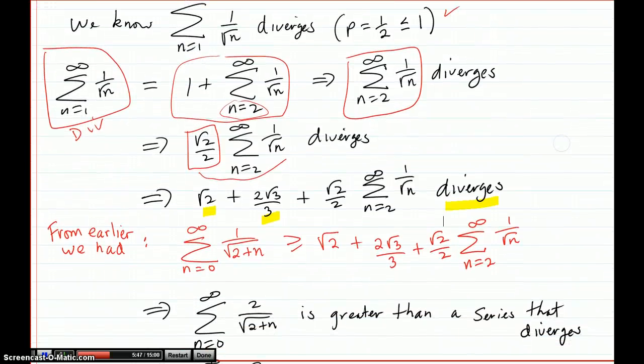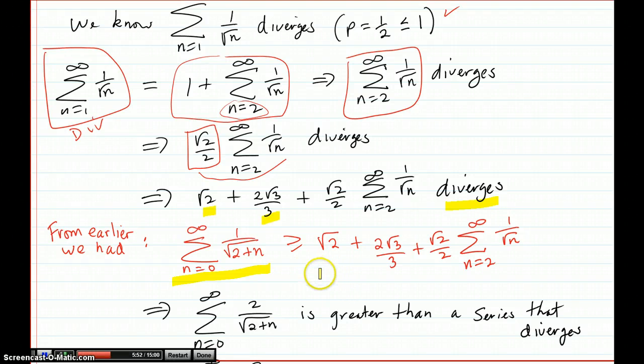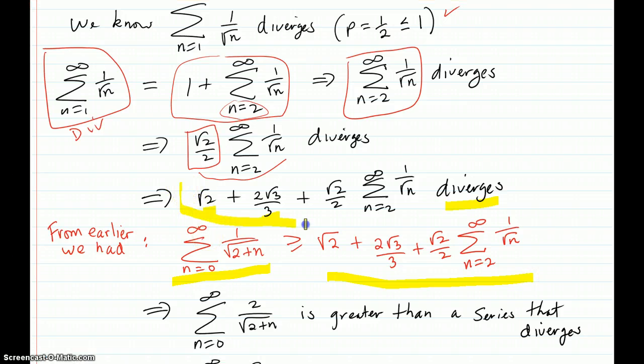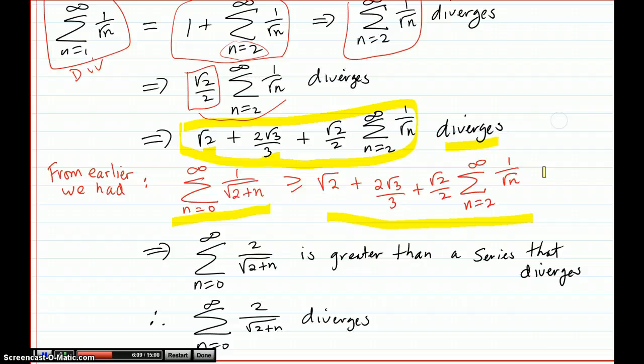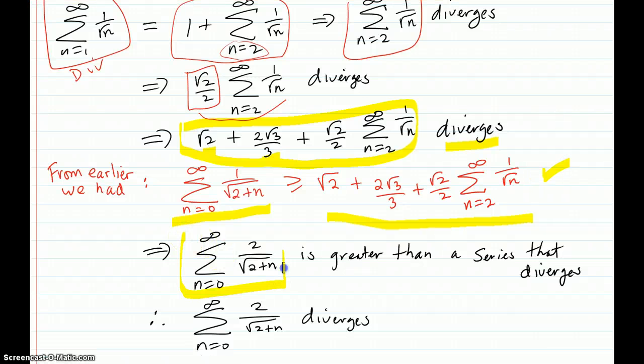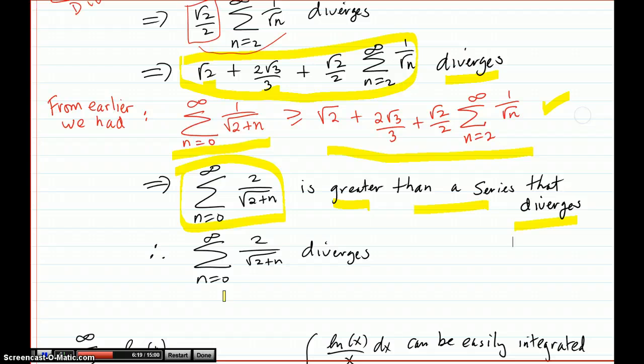So, from earlier, we had that our original series was greater than or equal to this sum right here. And that's exactly what is written here. And we already just said that this sum plus that series diverges. And so, what this line right there says is that our original problem, our series, is greater than a series that diverges. Therefore, our original series diverges.